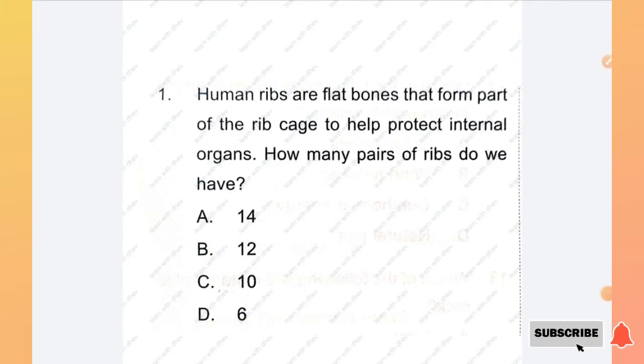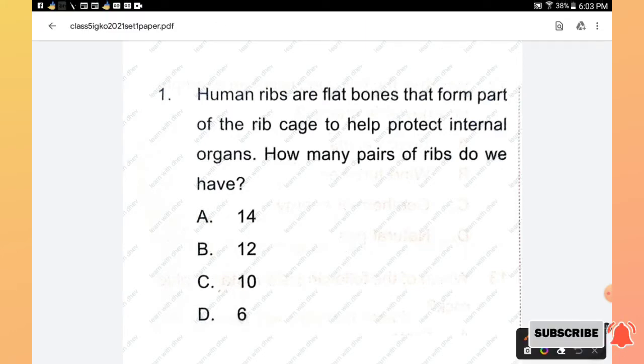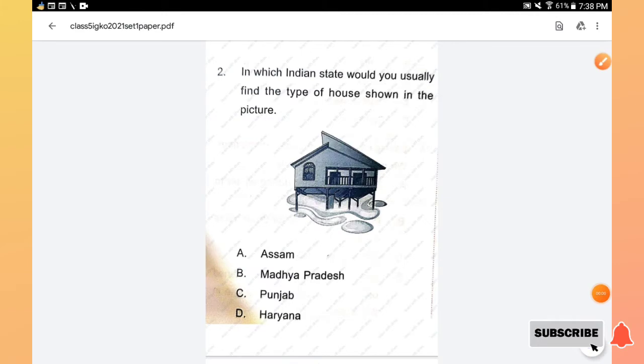The first section is General Awareness. Question number 1: Human ribs are flat bones that form part of the rib cage to help protect internal organs. How many pairs of ribs do we have?